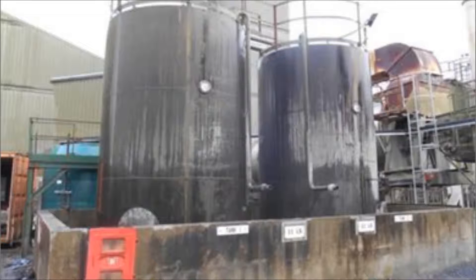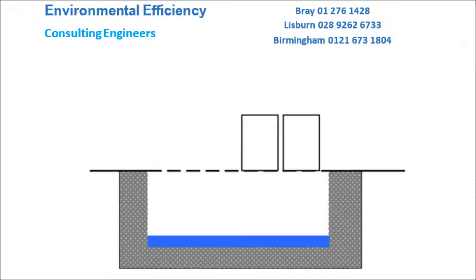The most common type of bond is a concrete or block bond, usually enclosing a large tank. This type of bond is termed local containment. An alternative type of local containment is a sump, which comprises a pit directly below the tank or drums.